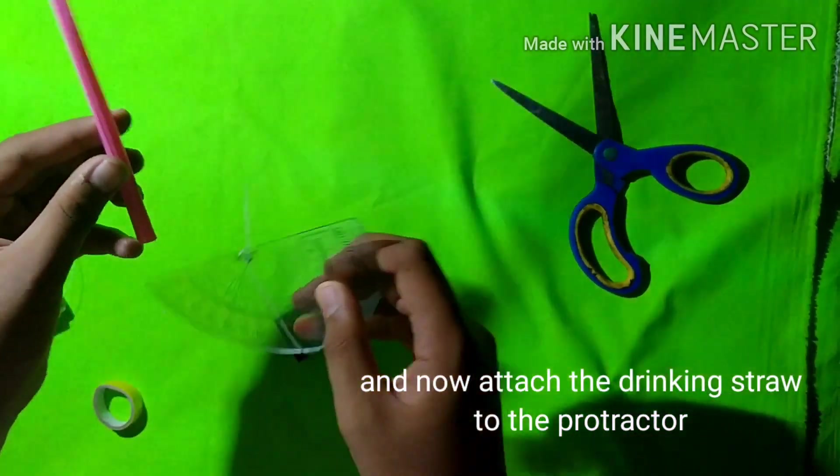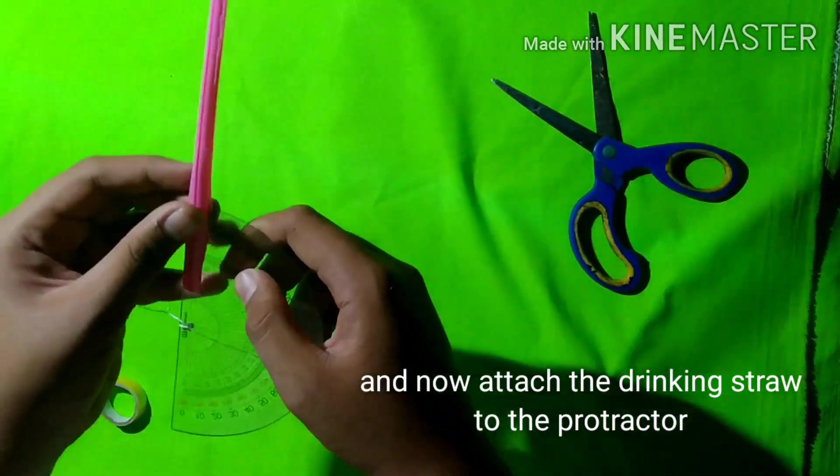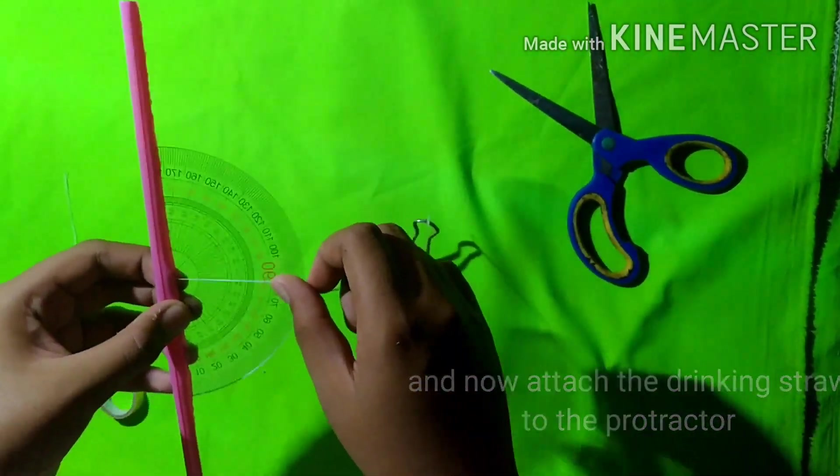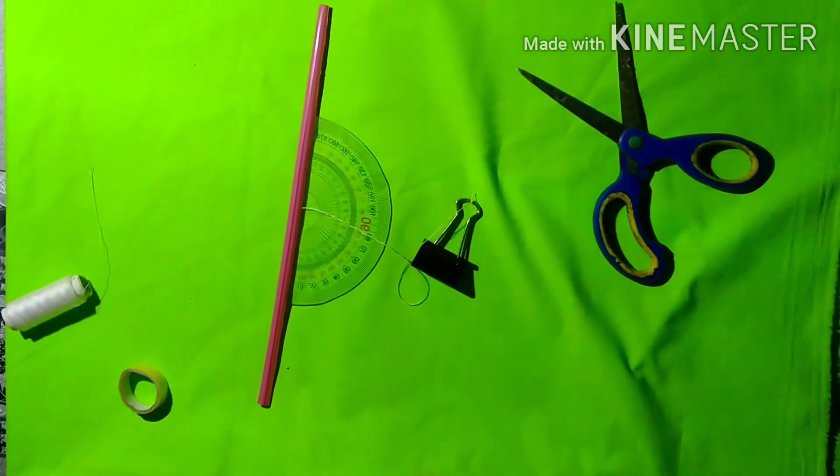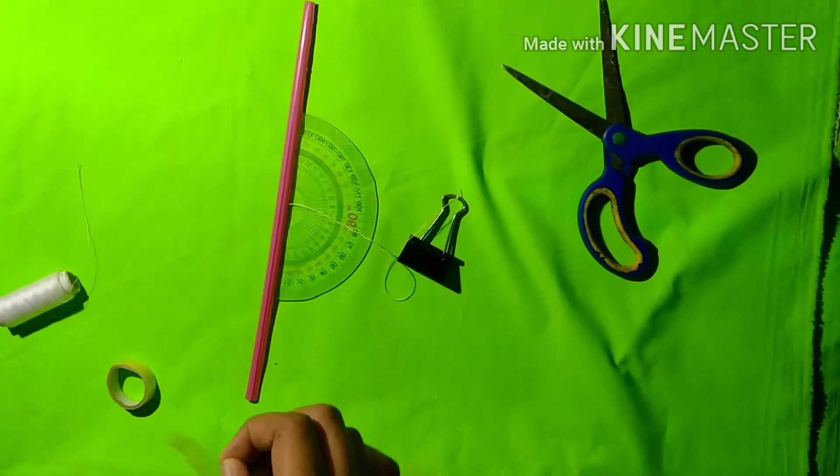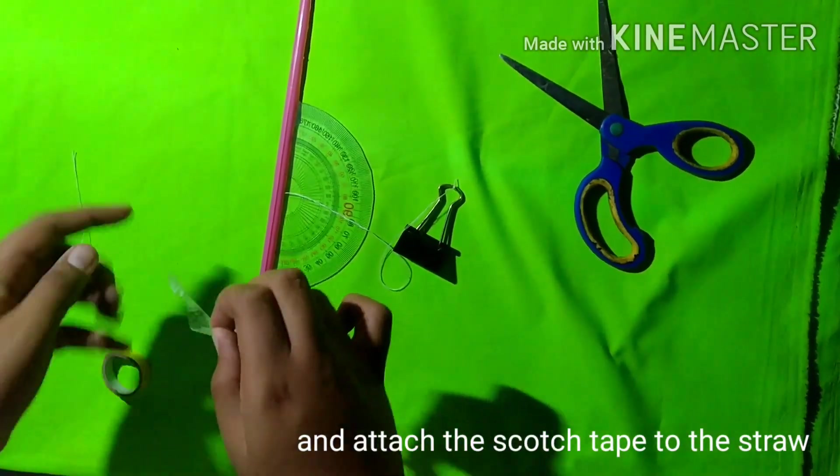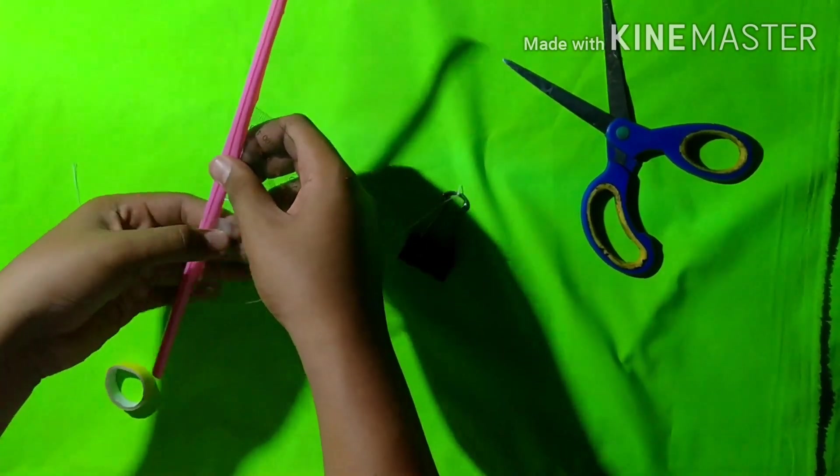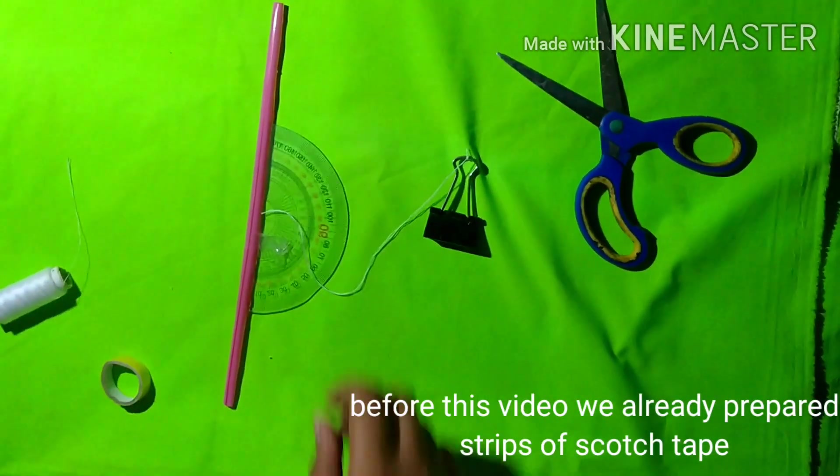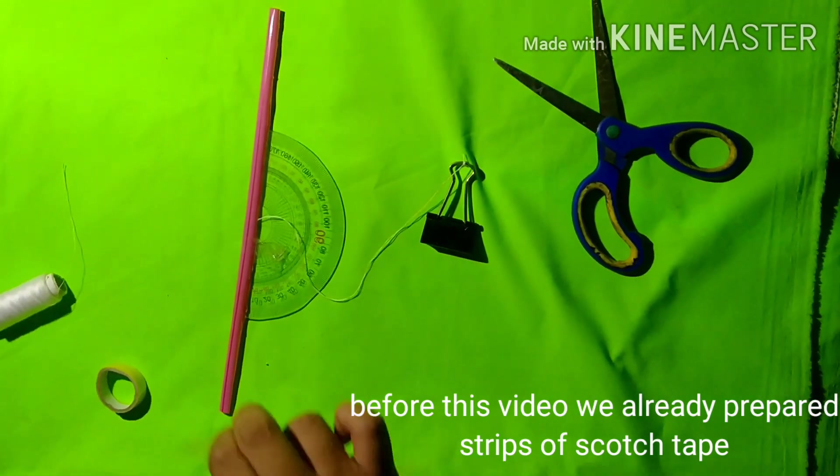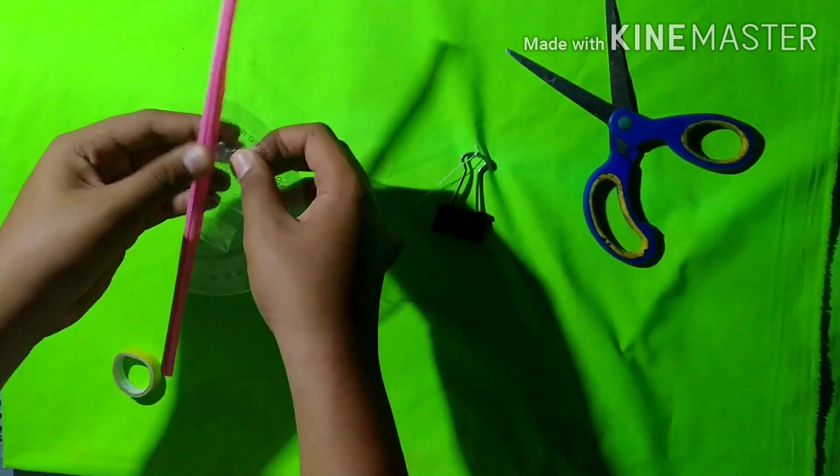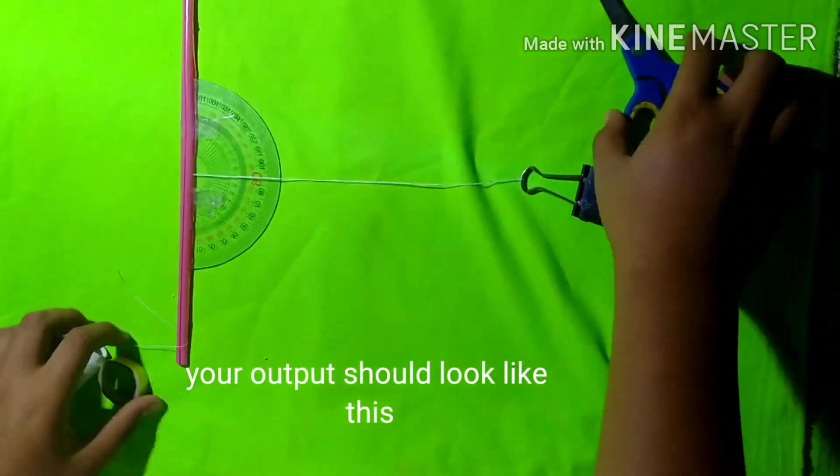And now, attach the drinking straw to the protractor. Before this video, we already prepared strips of scotch tape. Your output should look like this.